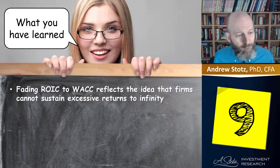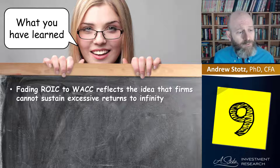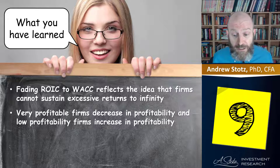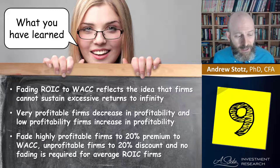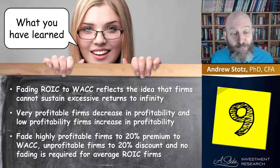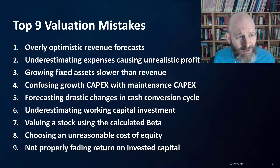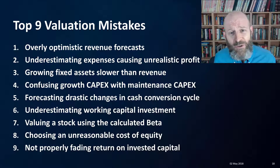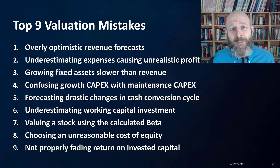Fading ROIC to WACC reflects the idea that firms cannot sustain excess returns to infinity. Very profitable firms decrease in profitability and low profitability firms increase in profitability. Fade highly profitable firms to a 20% premium to WACC, unprofitable firms to a 20% discount, and no fading is required for average ROIC — those are my rules of thumb. Those are the nine valuation mistakes I've seen. If you've got questions, suggestions, or comments, let me know. Otherwise, I'll see you in the Valuation Masterclass.